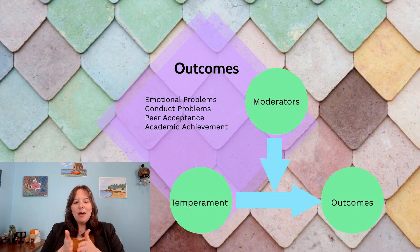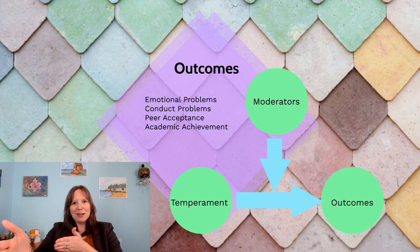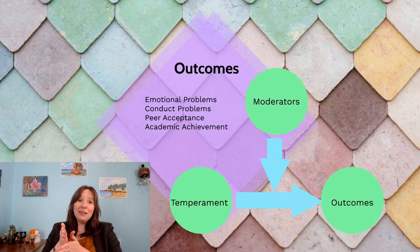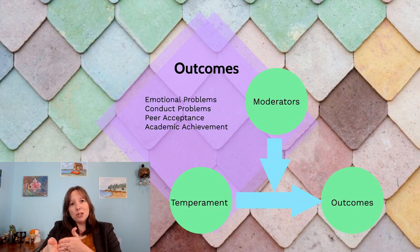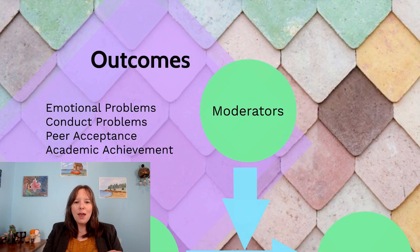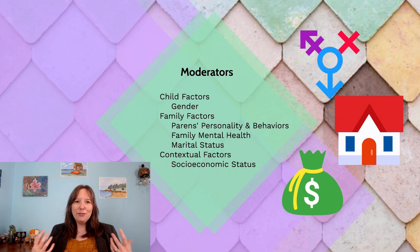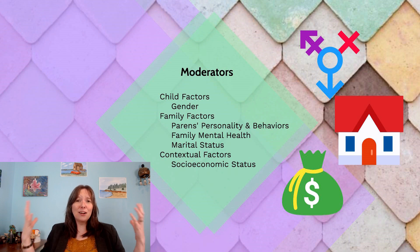These temperamental traits do tend to be tied to certain outcomes, but it's not a jail sentence — there are lots of things that can happen to moderate this. A moderator is the idea that if you're high in emotionality you might be on a train track leading to anxiety, but there could be things that happen in your environment or experiences that make you change tracks. We tend to find moderators at the child level, at the family level, and at the larger contextual level.